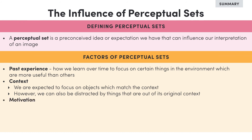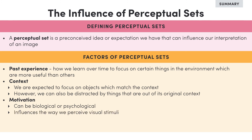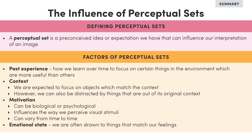Motivational factors, which can be biological or psychological, play a role in the way we perceive visual stimuli and can vary from time to time. And finally, our emotional state can significantly shape how we see an object, as we are drawn to things that match our feelings.